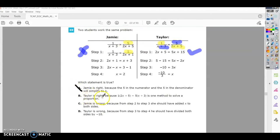It says Taylor is right because 1 times (2x + 5) equals 5 times (x + 3) is one method to solve. This one looks correct right now, but let's read the rest of them.